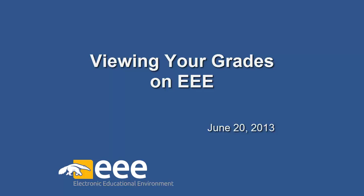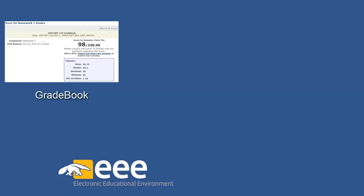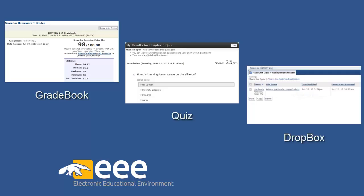There are three main places in which you may be able to access grades on EEE: Gradebook, Quiz, and Dropbox. It's up to your instructor to decide which EEE tools to use and what information your instructor would like to make available to you.